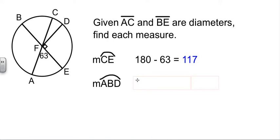What if we want arc ABD? This whole big arc. Well, that would be 360 minus this part. So 360 minus the 63 that's here, minus this 90, which leaves us 207.